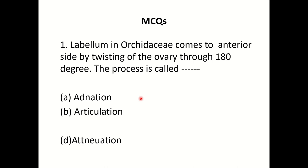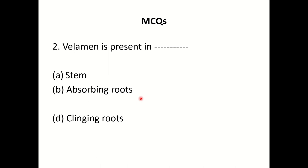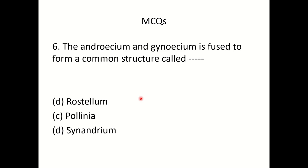Now let's try answering some multiple choice questions. Question 1: Labellum in orchids comes to the anterior side by twisting of the ovary through 180 degrees — this process is called resupination. Question 2: Velamen is present in hanging roots. Question 3: The androecium and gynoecium are fused to form a common structure called gynandrium.